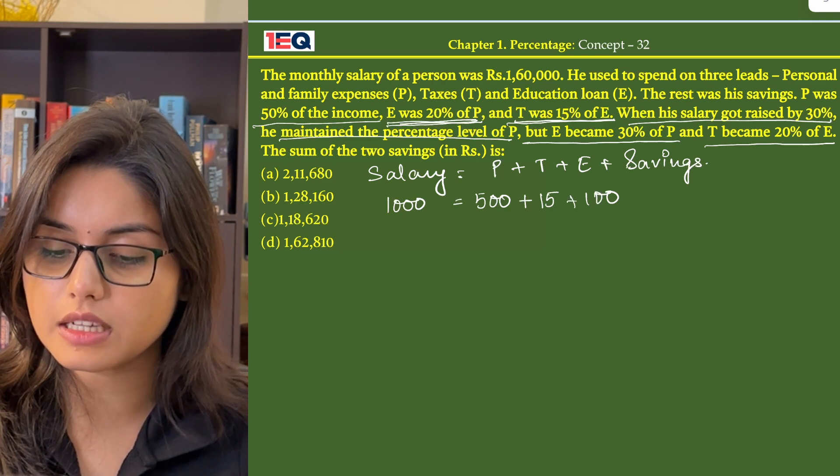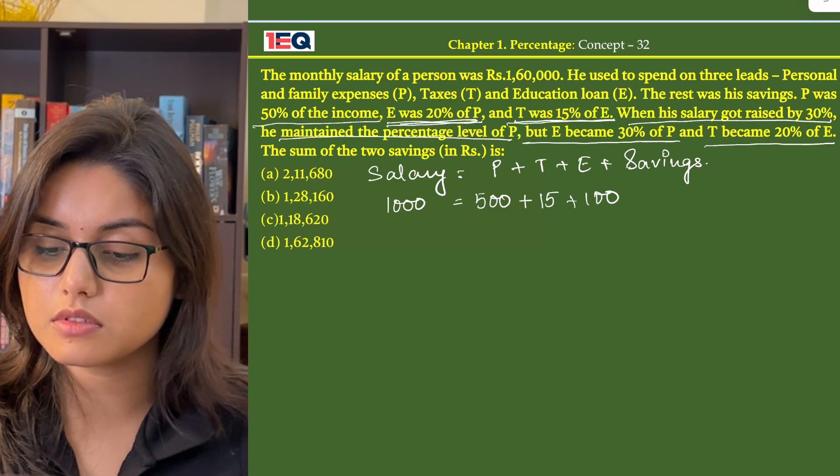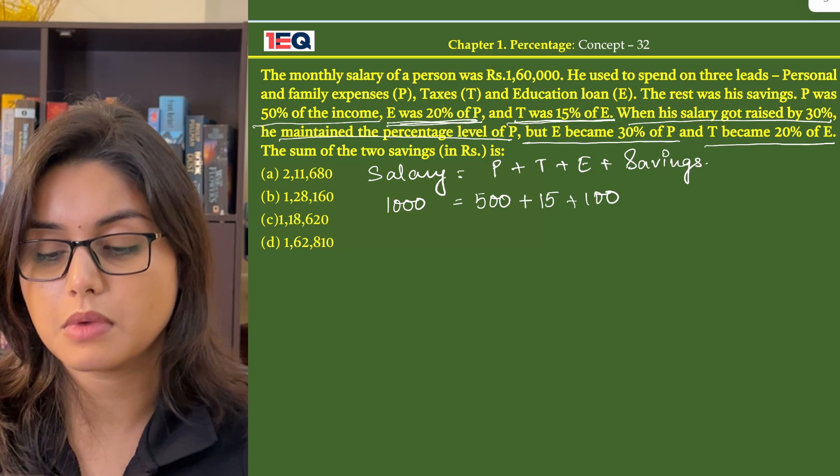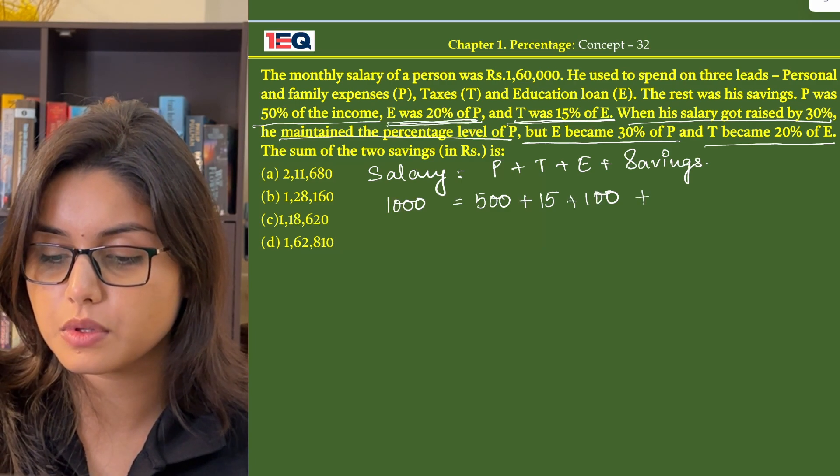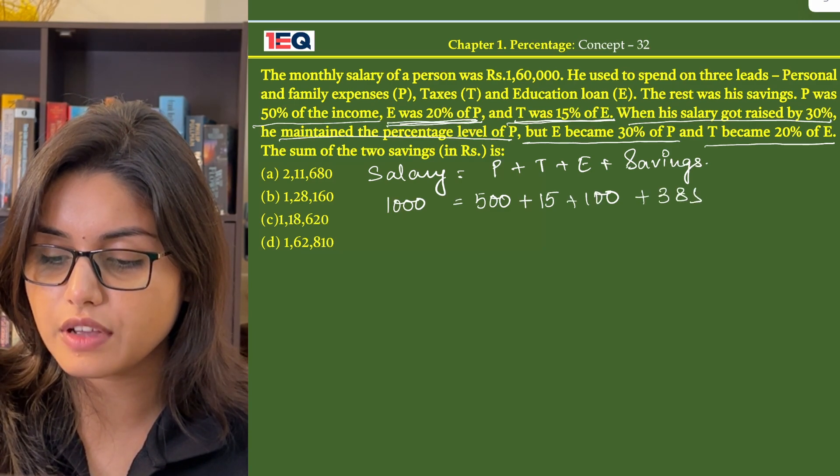Now after subtracting 500, 600, 615 from 1000, we are left with 385 as our savings.